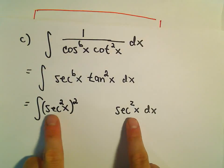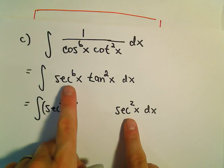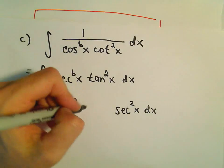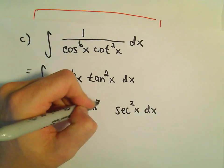If you were to multiply all these together, we would get secant to the sixth back. Tangent squared is still just hanging out.